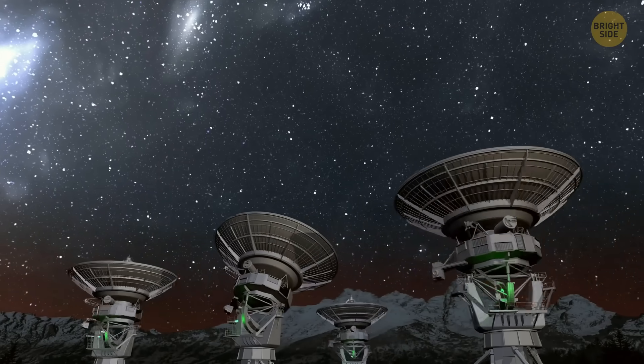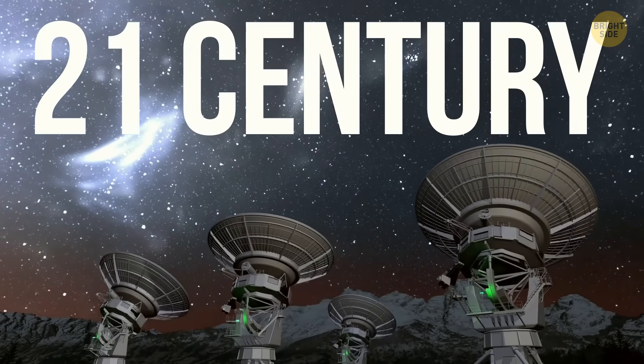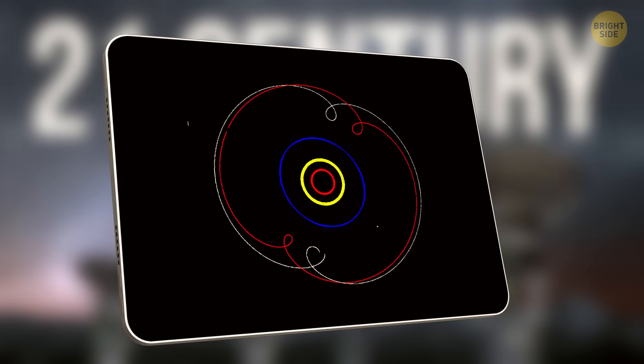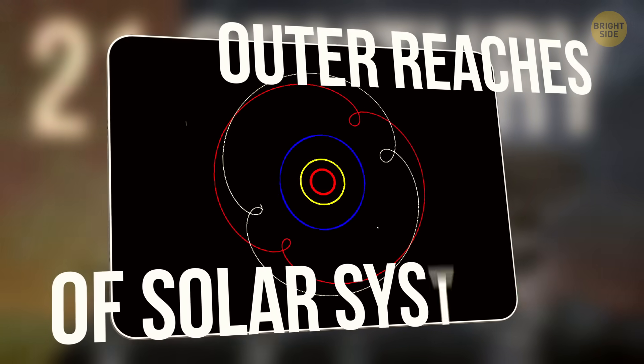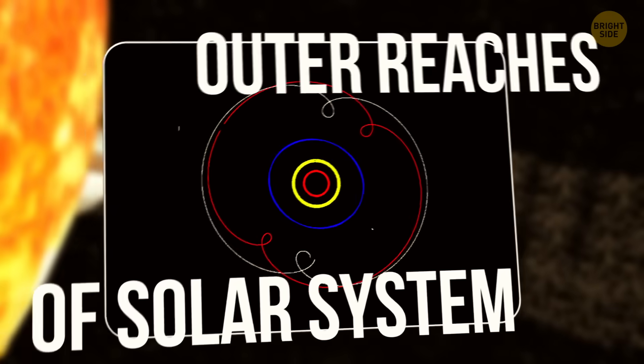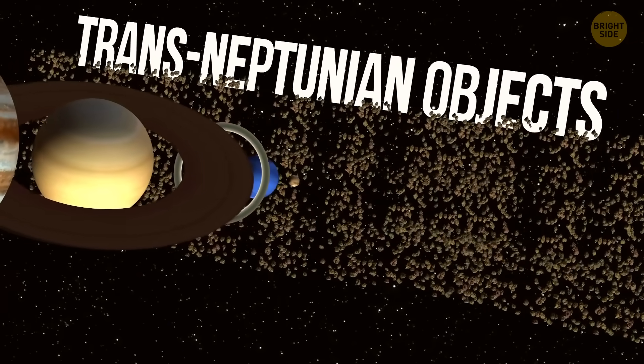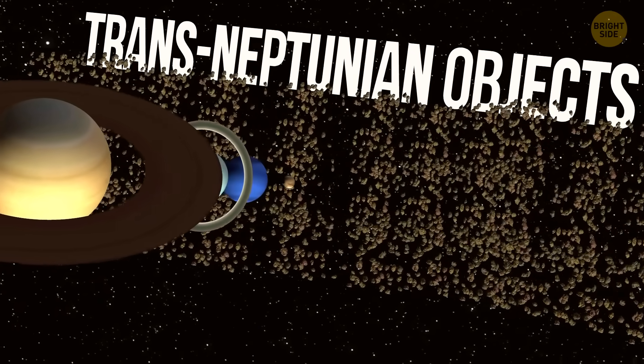The search for Planet 9 began in the early 21st century when a group of astronomers realized that something wasn't quite right with the outer reaches of our solar system. They noticed that some distant objects, known as trans-Neptunian objects, were behaving in unexpected ways.